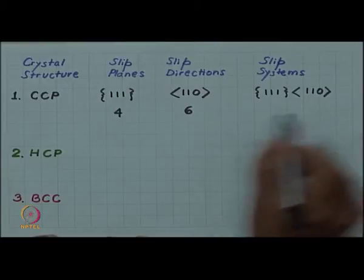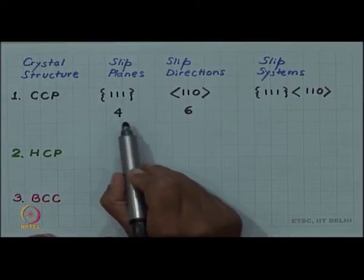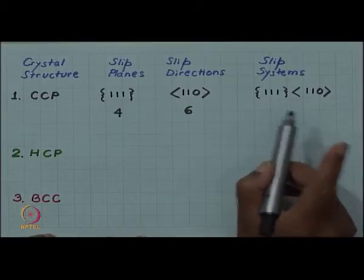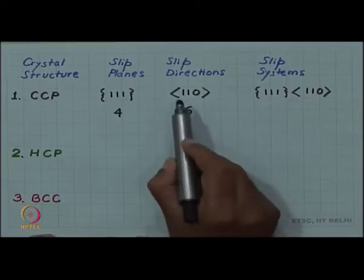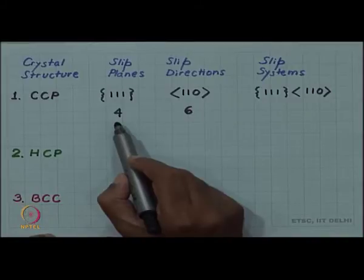But recall that we have 6 directions and 4 planes. So we may think that there will be 24 slip systems, but not really because out of these 6 directions, all 6 does not lie on each of these 4 planes.